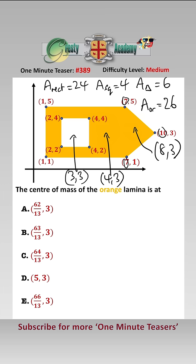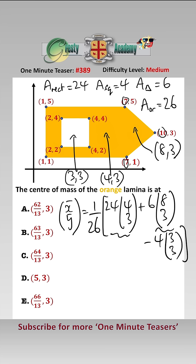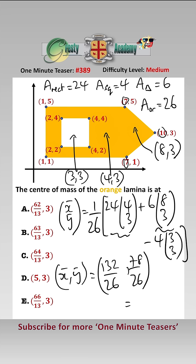Now the centre of mass of the orange lamina, using vectors, we have (x̄, ȳ) is equal to 1 over the total area, which is 1 over 26, times: 24 times (4, 3), which is the rectangle contribution, add 6 times (8, 3), which is the triangle contribution, minus 4 times (3, 3), which is the square hole being taken away. And that equals (x, y) is equal to 1 over 26 times (132, 78) over 26, which simplifies to (66/13, 3). That is answer E.